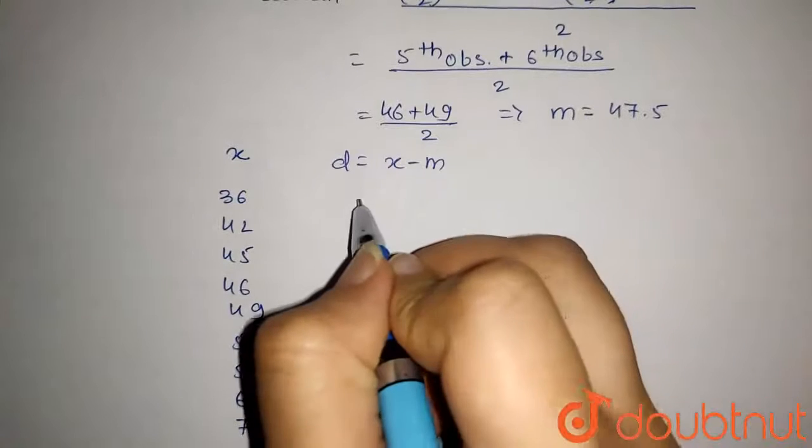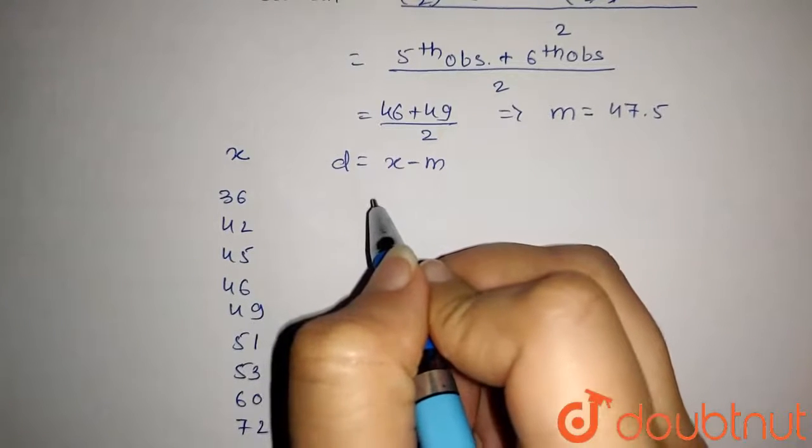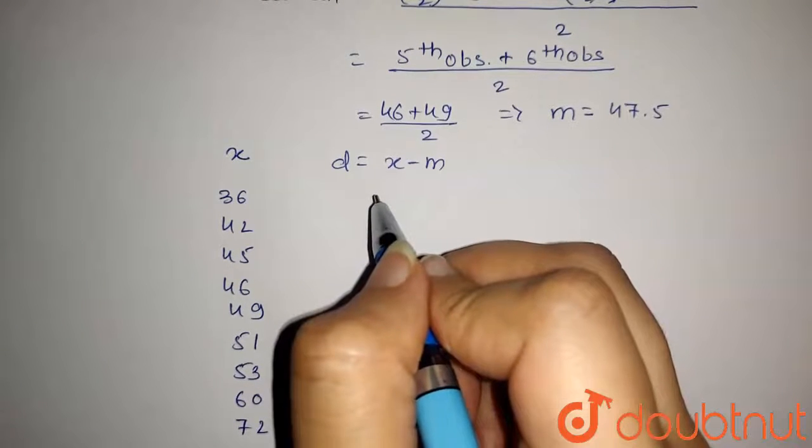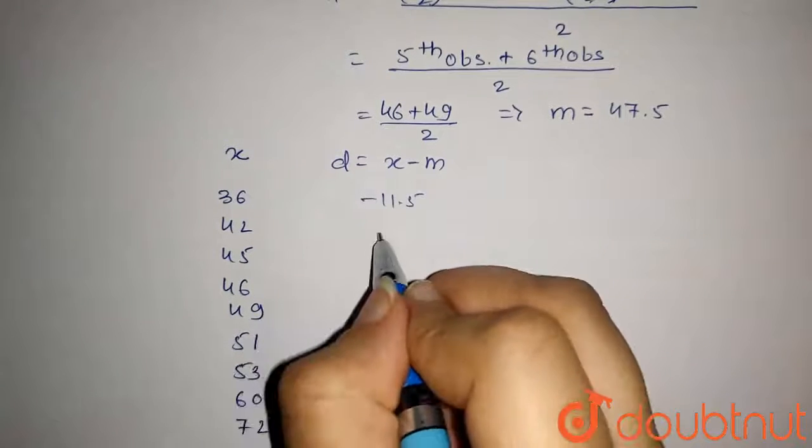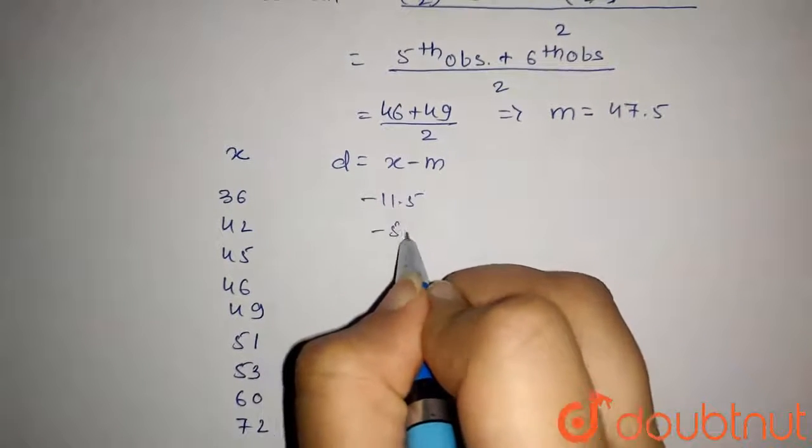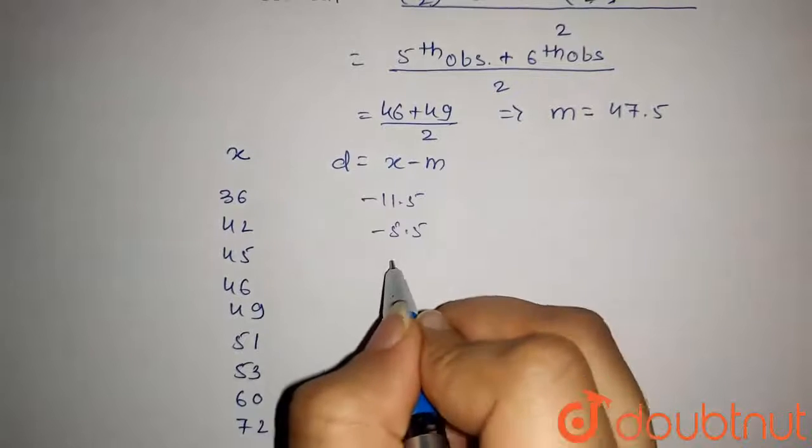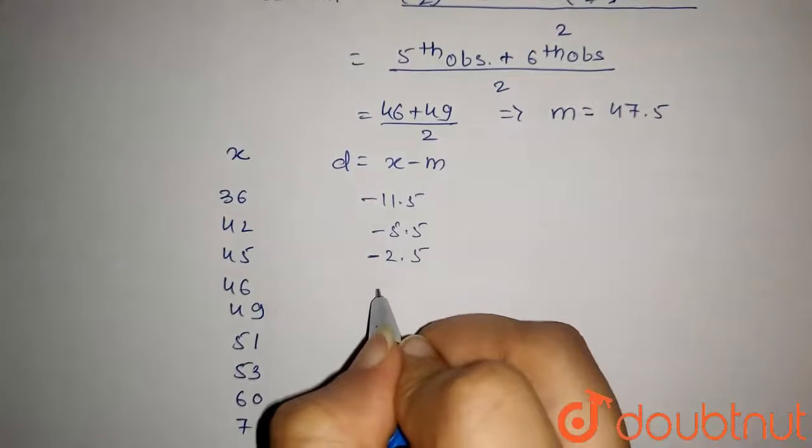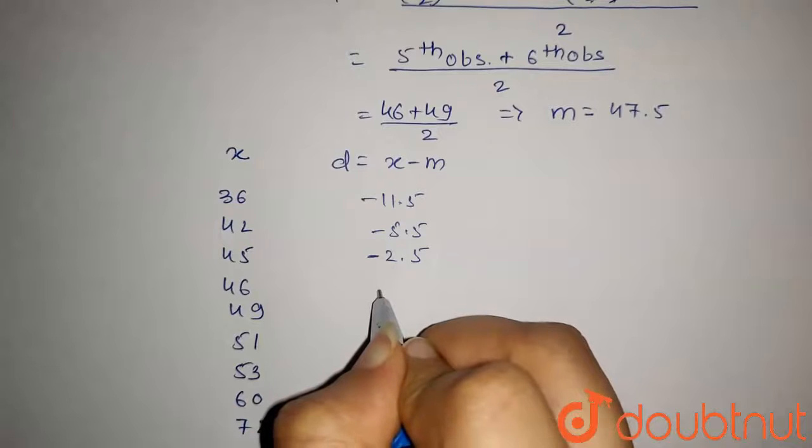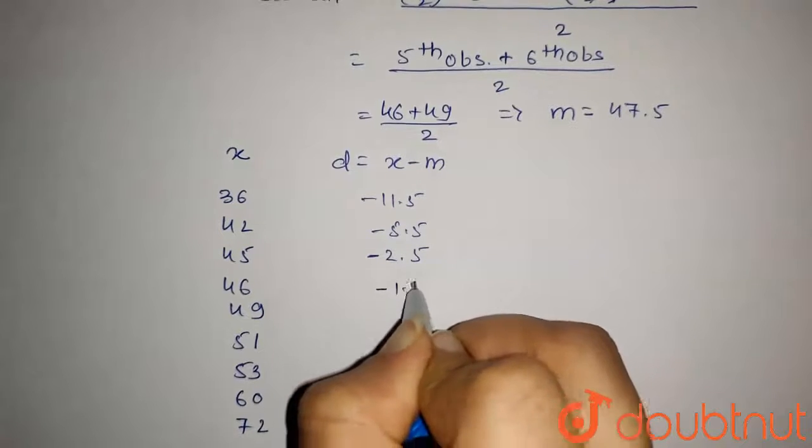So 36 minus 47.5 will be minus 11.5. 42 minus 47.5 will be minus 5.5. This will be minus 2.5. 46 minus 47.5 will be minus 1.5.